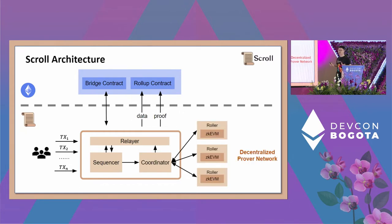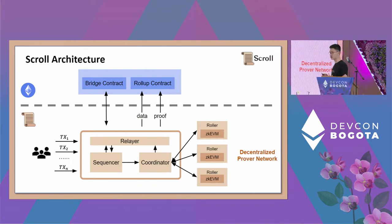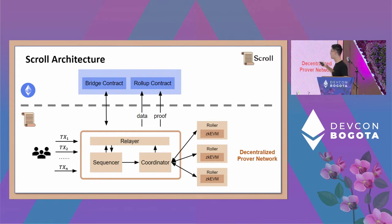A unique feature of Scroll is that we are not running the prover in a centralized way. Instead, we have a decentralized prover network for generating proofs. In our architecture, we have a coordinator that receives blocks from the sequencer, generates execution traces, and dispatches those traces for different blocks to different provers in our network. We call them 'rollers' to distinguish them from miners. They run ZKEVM and generate the proof, then send it back to the coordinator, which forwards it to the relayer and up to layer one.